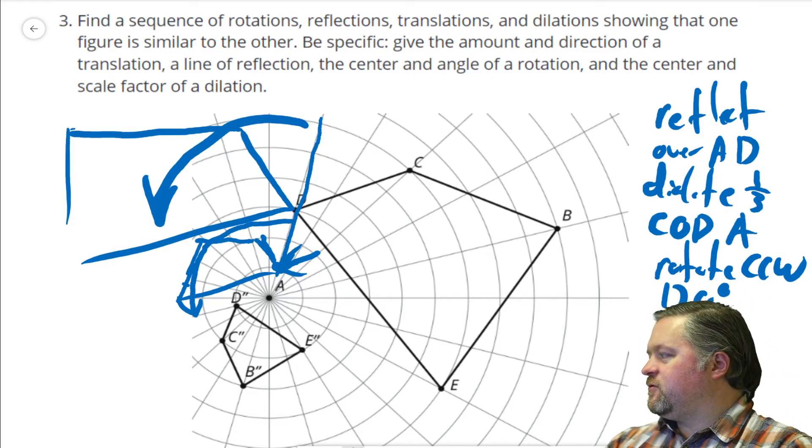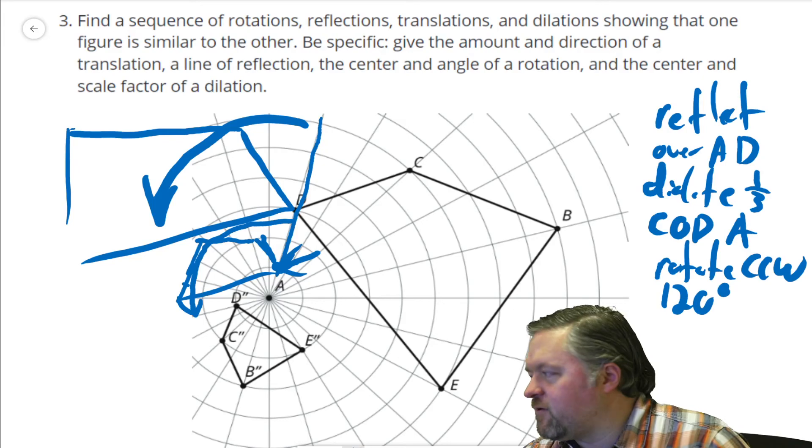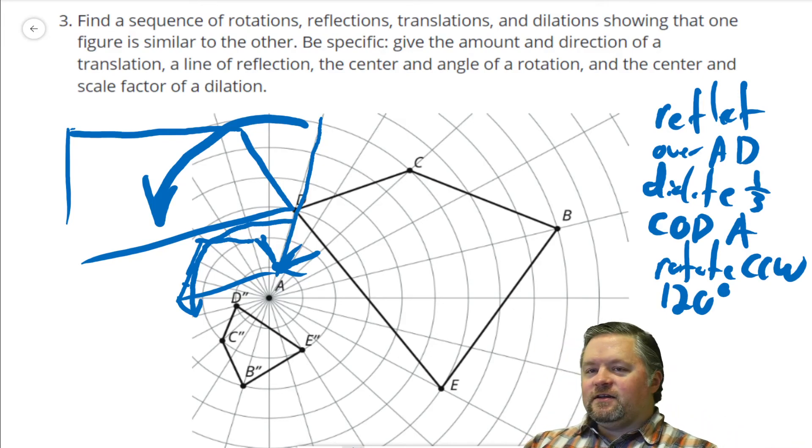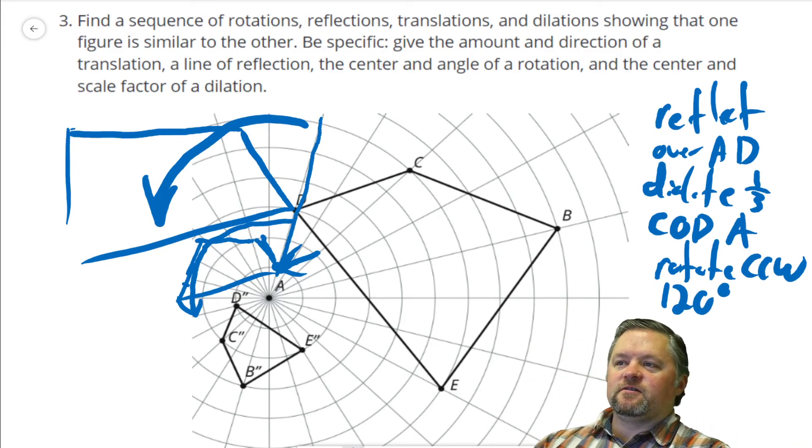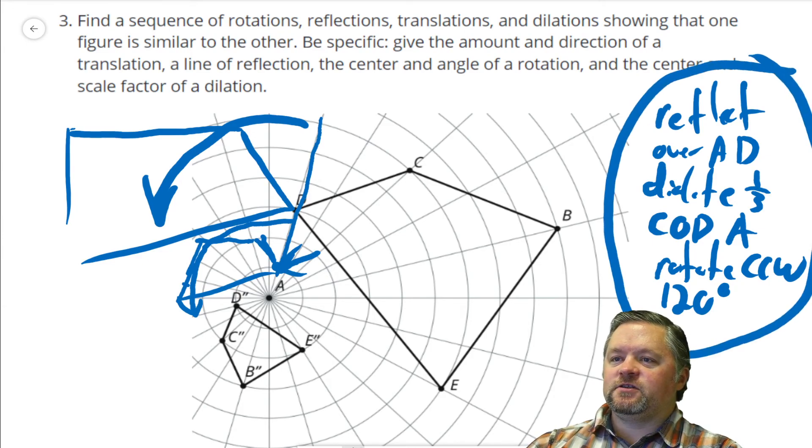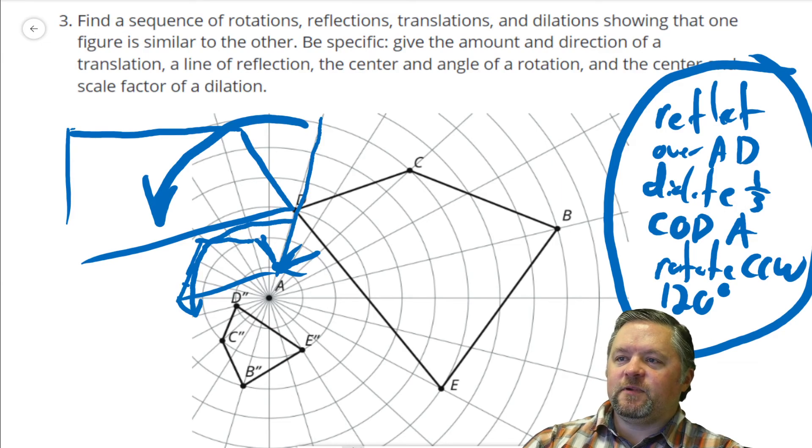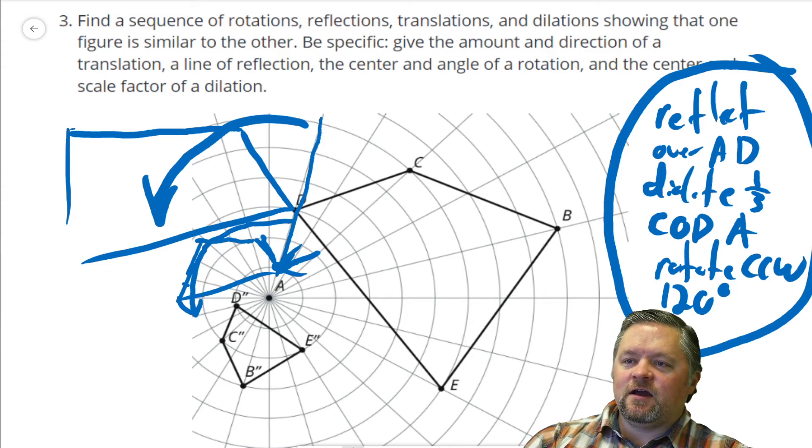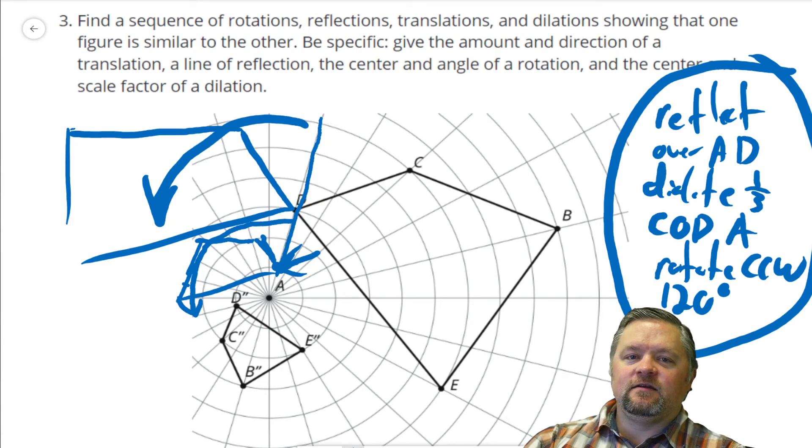Rotate it a hundred and twenty degrees. Let me just quickly remove my head. Hey, look. You can see where I wrote a hundred and twenty degrees. This is our sequence of transformations that will put that nice big BCDE onto the nice little tiny, rotated, reflected BCDE prime.